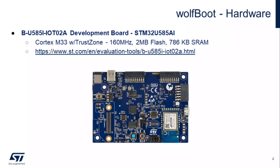This is the development board target we'll be using today. This is a U585 called the IoT 02 development board. It's a Cortex M33 running at 160 megahertz. It has two megabytes of flash and 786 kilobytes of RAM.